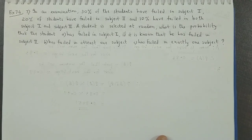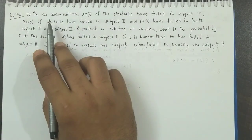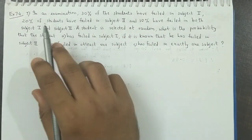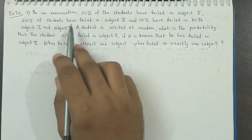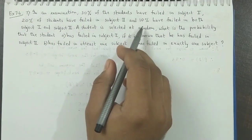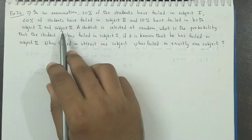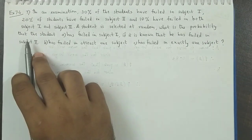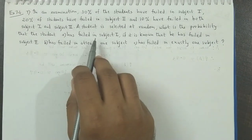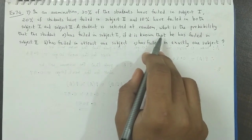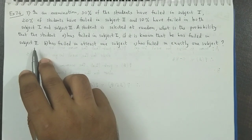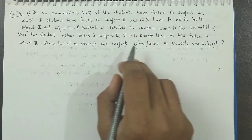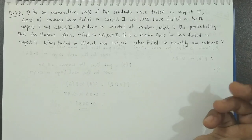Now let's take another example of probability. In an examination, 30% of the students failed in subject 1, 20% students failed in subject 2, and 10% students failed in both subject 1 and subject 2. A student is selected at random. What is the probability that the student has failed in subject 1, if it is known that he has failed in subject 2? Second case: he has failed in at least one subject. And last case: he has failed in exactly one subject.